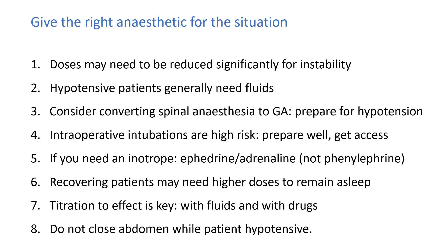Consider converting spinal anesthesia to general anesthesia, but prepare for hypotension. Patients with a functional spinal anesthetic will have more hypotension than those without, so you need an inotrope ready in the form of ephedrine or adrenaline. If you are going to intubate intraoperatively, these are high-risk intubations, so prepare well. Make sure you have access to the airway — the screen and positioning of the patient are problems with intubation intraoperatively. The inotrope of choice would be either ephedrine or adrenaline as a default, not phenylephrine, which is specifically indicated for vasodilatation due to spinal anesthesia.